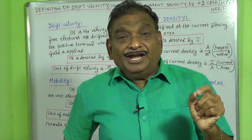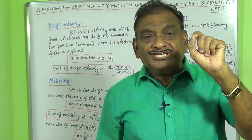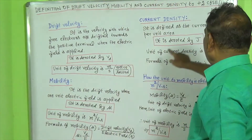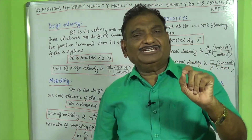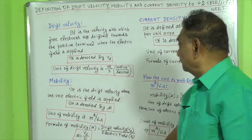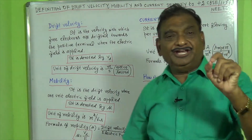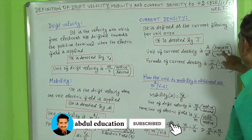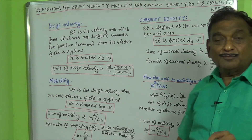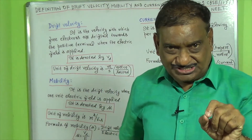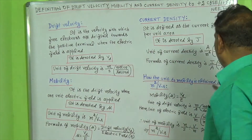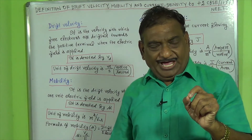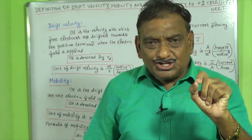The current density is defined as the current flowing per unit area. It is denoted by the letter capital J. The unit of current density is ampere per meter square. The formula for current density is current divided by area.